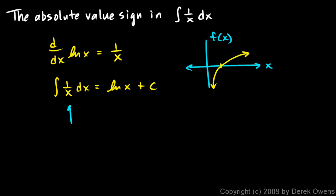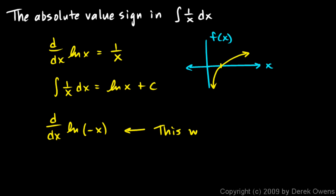But it's possible to imagine this function where x is negative. So how do we reconcile the fact that x can be positive or negative here, but we can't have a negative number as the argument for our natural log function? We can think about the derivative with respect to x of the natural log of negative x. That can be done, and that will only work if x is negative — this will work if x is less than 0.